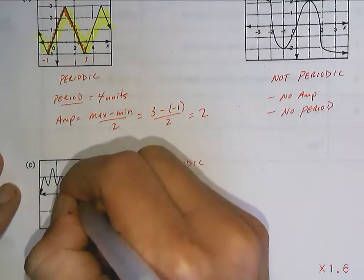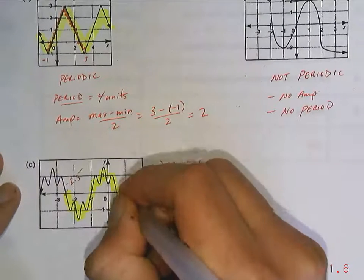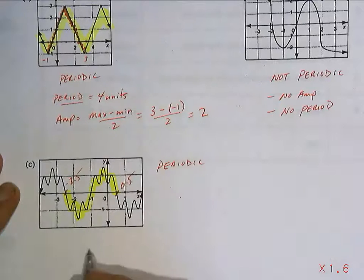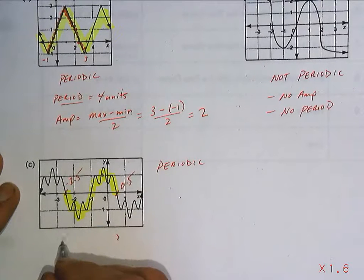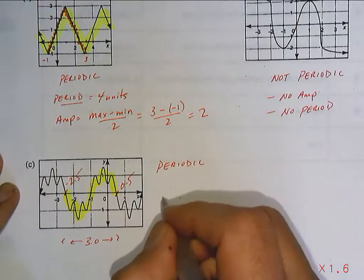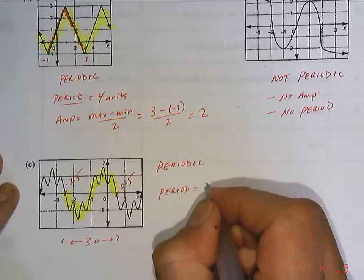So this looks to be about negative 2.5. This looks to be about 0.5. So its period is the distance between those two. So that's about 3.0 units.